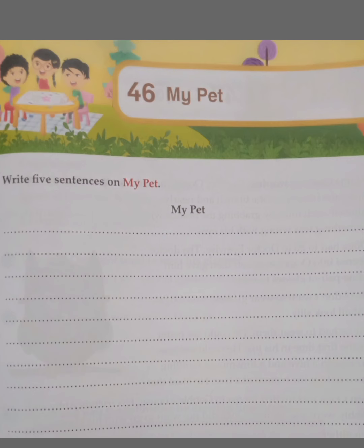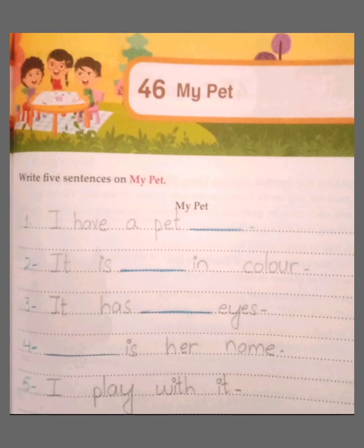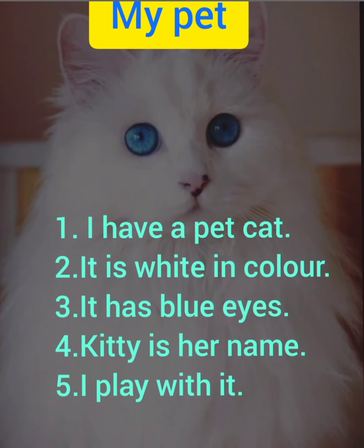Here we have written in the copy — 'My Pet,' which is about the cat. You will write about the cat in the book. If you don't understand it, you can also write in the copy. If you have a pet cat, you can also write the name of your cat. It is white in color. Your pet cat has blue eyes — you can also write about the eyes. Then, Kitty is her name — write your pet's name in place of Kitty. Last, I play with it. Five lines you have to write in the book.